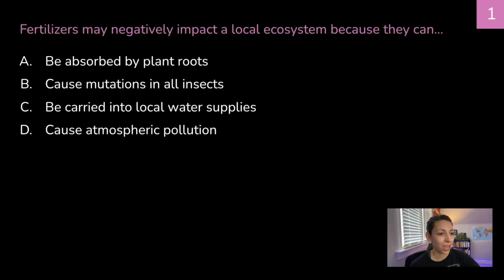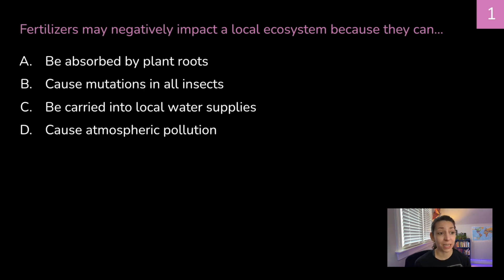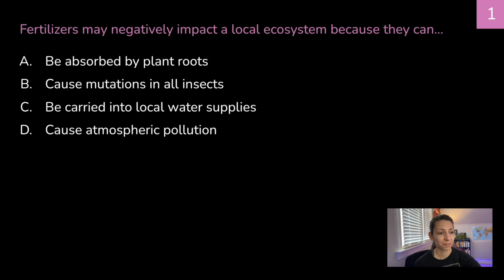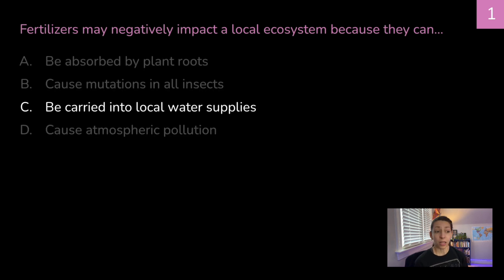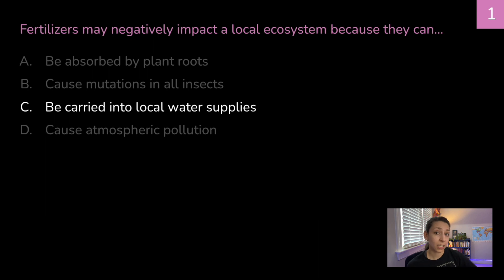Practice question: Fertilizers may negatively impact a local ecosystem because they can — A, be absorbed by plant roots; B, cause mutations in all insects; C, be carried into local water supplies; or D, cause atmospheric pollution. The correct answer is C. Fertilizers have a risk of being washed into local water supplies, which could cause harmful effects on species that live in local water systems, or to the organisms and people who drink that water.